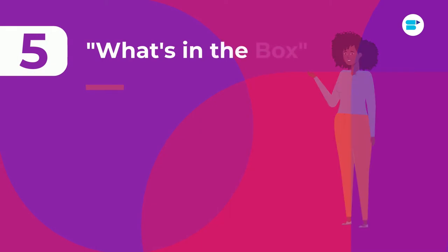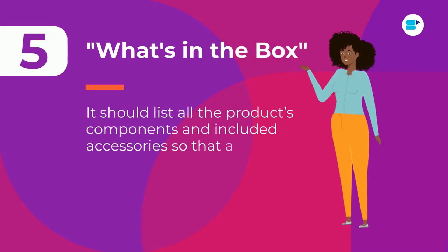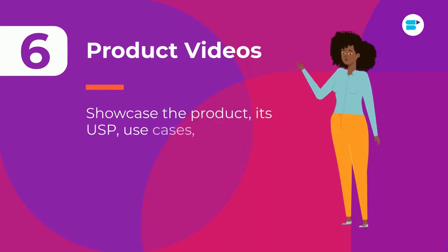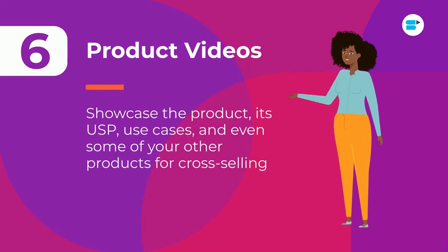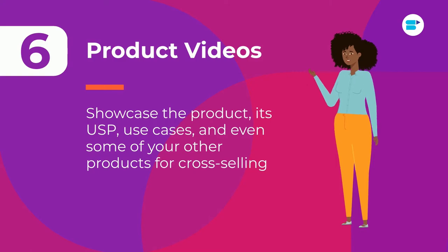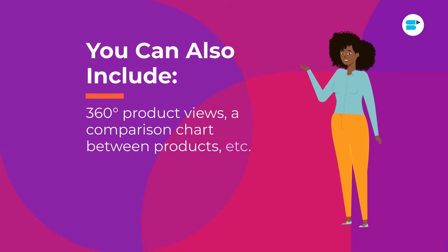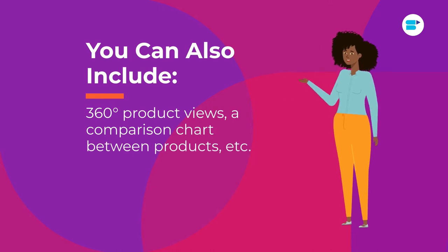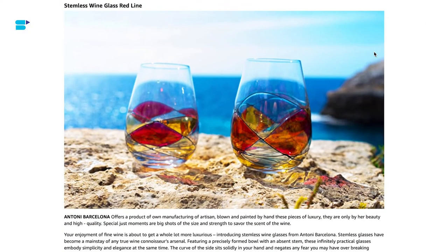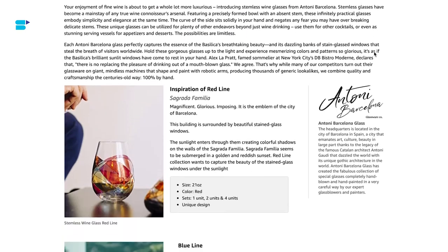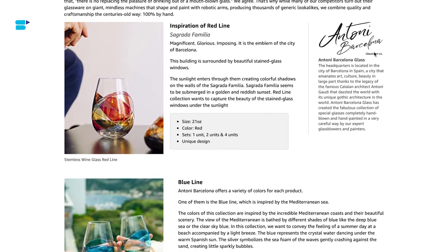Five, a what's-in-the-box section that lists all the product's components and included accessories so the buyer knows what they're getting. Six, product videos that showcase the product's use cases and even some of your other products for cross-selling. You can also include other elements like 360-degree product views, a comparison chart between products, and more. What you see on screen right now are examples of listings with attractive A-plus content that include all the elements we've mentioned.